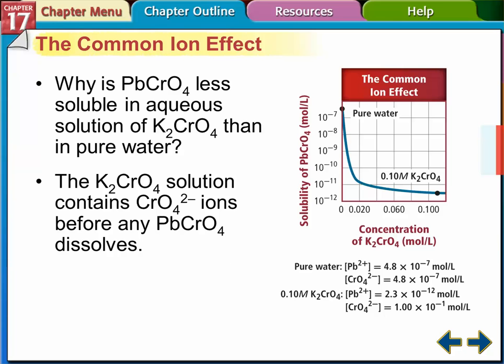Common ion effect, okay? Why is lead chromate less soluble in aqueous solution of potassium chromate than in pure water? Okay? So this is the common ion effect. So you can see that if we have a solution that's got lead chromate in it and we mix it with a solution that's got potassium chromate in it, well, the chromate is a common ion, right? So this is going to double our chromate ion concentration, right, when we mix these together.